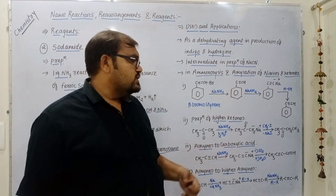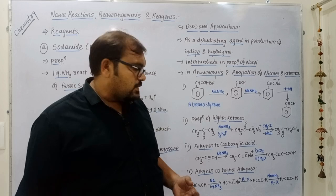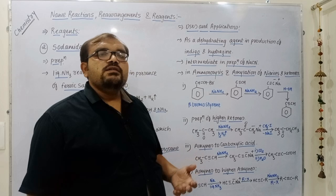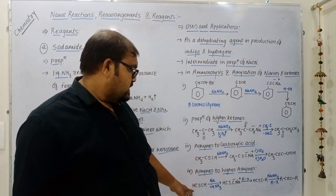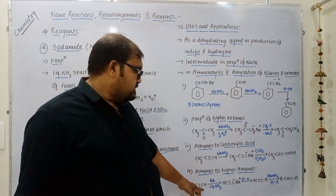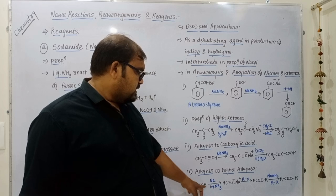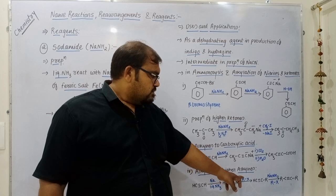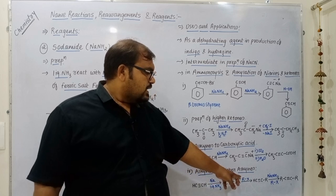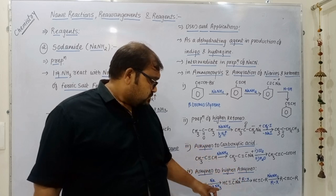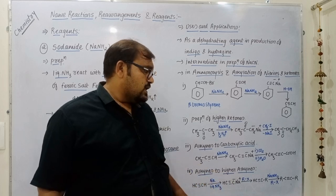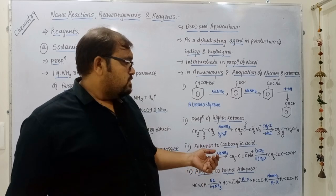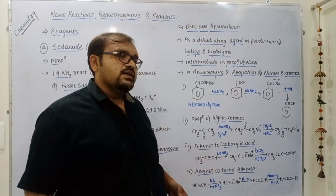Sodamide is also used for converting alkynes to higher alkynes. When any alkyne is reacted with sodium in liquid ammonia, it gives the sodium salt of alkyne. This sodium salt reacts with an alkyl halide to replace one hydrogen with an alkyl group. Repetition of this step gives higher alkynes.